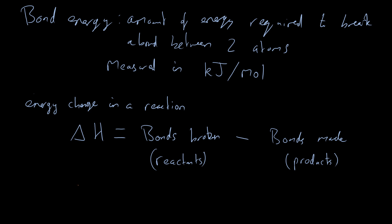Before looking at an example, one key thing to realize: the amount of energy used to break a bond is exactly the same as the amount of energy released when we make that bond. For example, the bond energy for two hydrogen atoms is 436 kilojoules per mole — you don't need to remember these figures, they'll be given in questions. This means 436 kJ/mol is used to break one mole of H-H bonds, and the same amount is released when one mole of H-H bonds are formed.